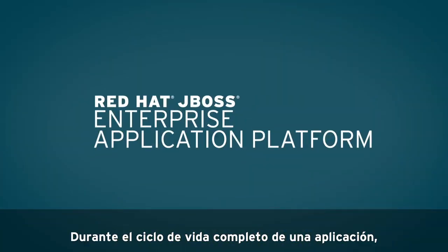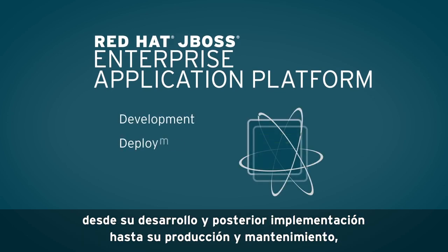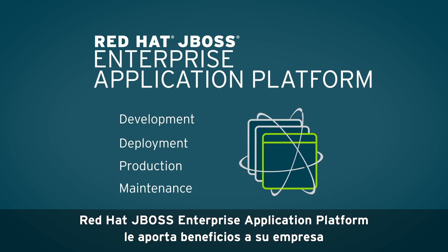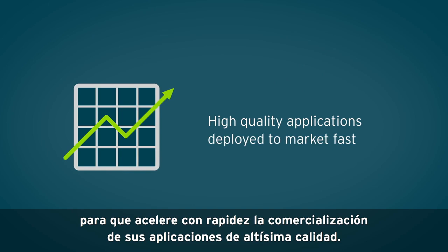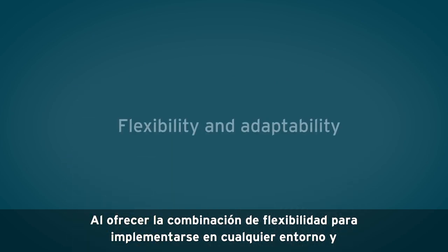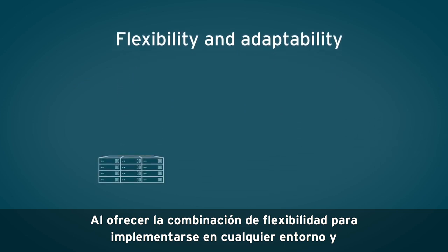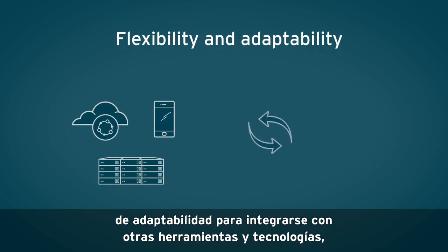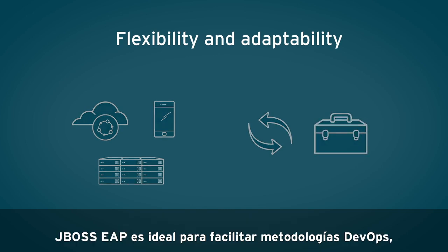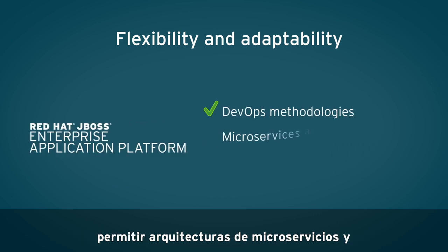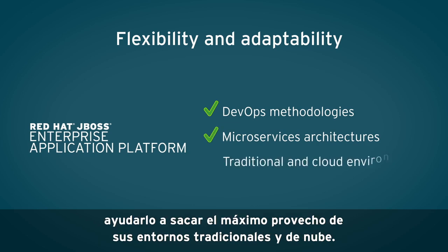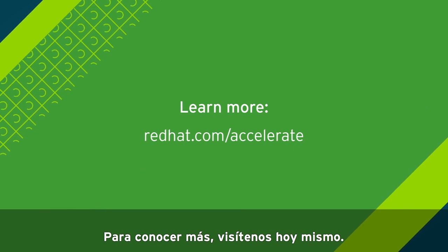Throughout an application's entire lifecycle — from development to deployment, production, and maintenance — Red Hat JBoss Enterprise Application Platform provides your organization benefits to get high-quality applications deployed to market fast. Offering the combination of flexibility to deploy in any environment and adaptability to integrate with other tools and technologies, JBoss EAP is ideal for facilitating DevOps methodologies, enabling microservices architectures, and helping you get the most from your traditional and cloud environments. To learn more, visit us today.